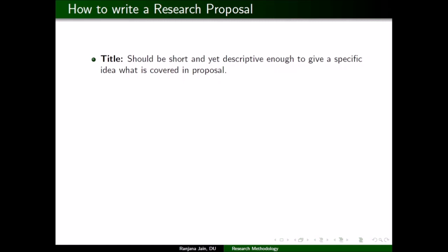There are several aspects to a research proposal — just as a research paper has a structure with an abstract, title, introduction, and other sections, the same applies to a research proposal. The first part is the title: it should not be very long, but should be descriptive enough to give a specific idea of what is covered in the proposal.